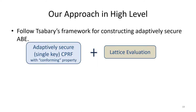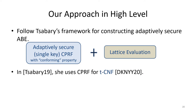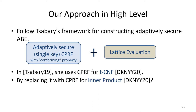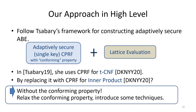Here I explain our approach at a very high level. We basically followed Sabari's approach for constructing adaptively secure ABE by combining adaptively secure constrained PRF, or CPRF in short, and lattice evaluation techniques. For this framework, we need the CPRF to have the property called conforming property. In Sabari's work, she obtained adaptively secure ABE for T-CNF formula using a CPRF for the same predicate with conforming property. Since Davidsson et al. proposed adaptively secure CPRF for inner product, a natural approach would be combining this CPRF with the above framework. However, their construction does not have conforming property and thus is not compatible with the above framework. To overcome this, we relax the conforming property and introduce some techniques.